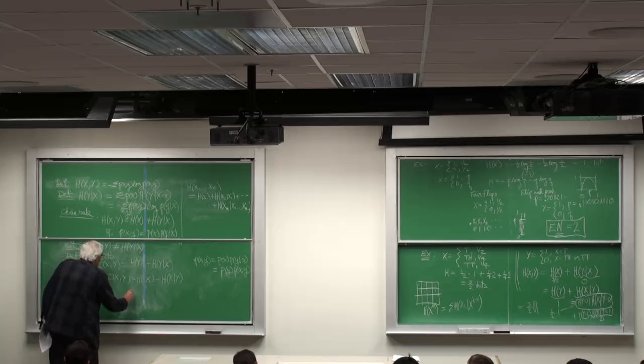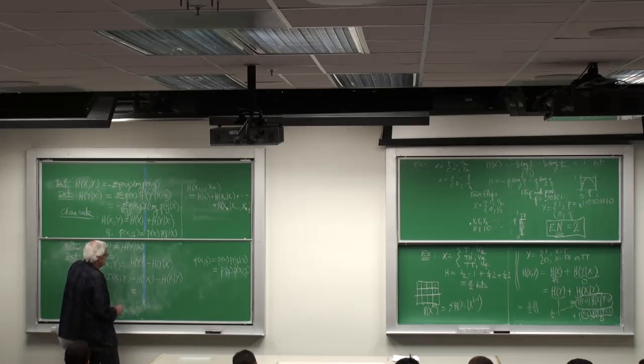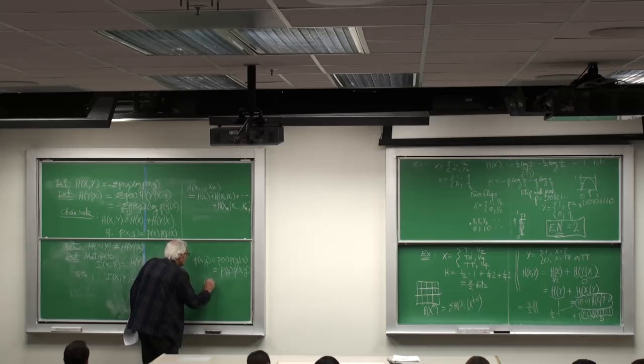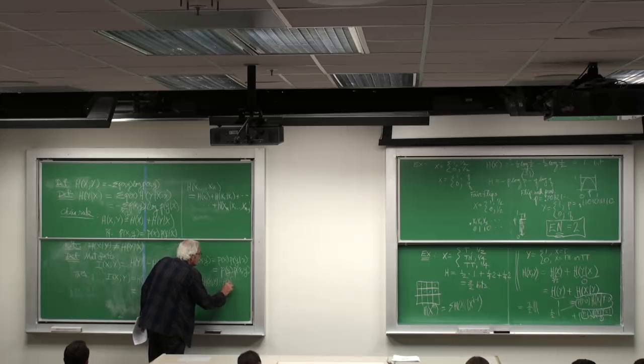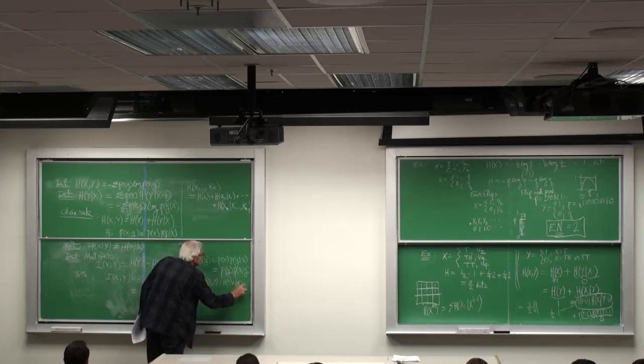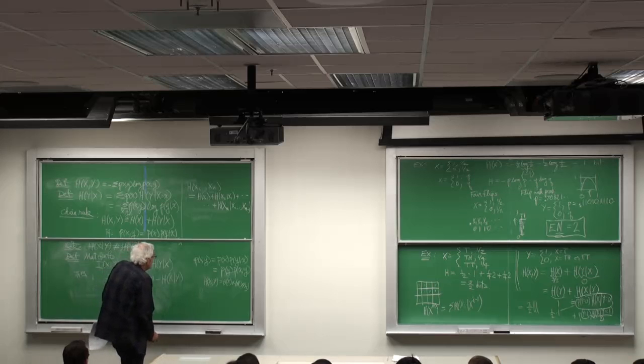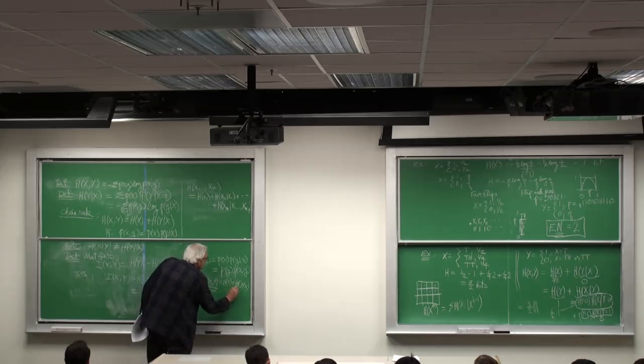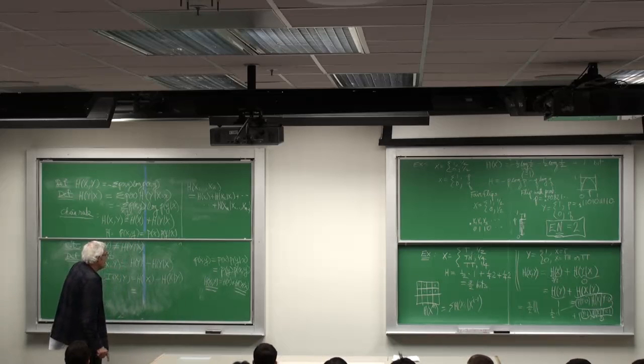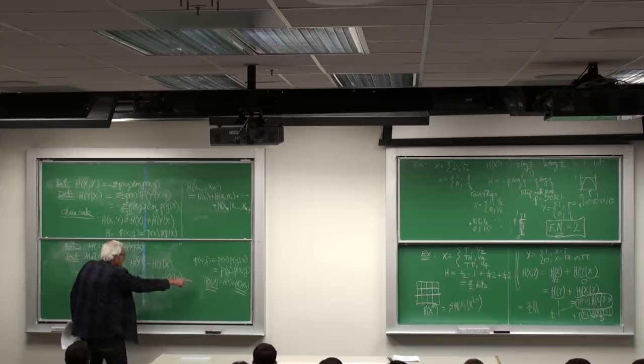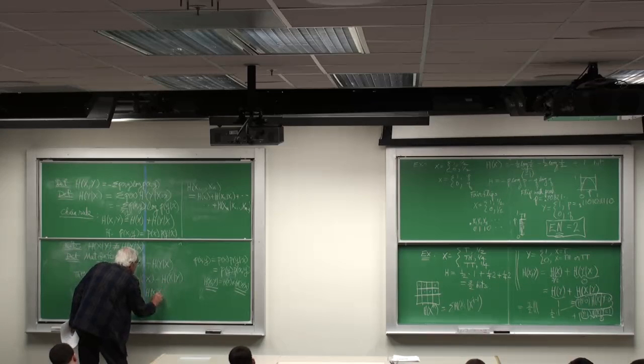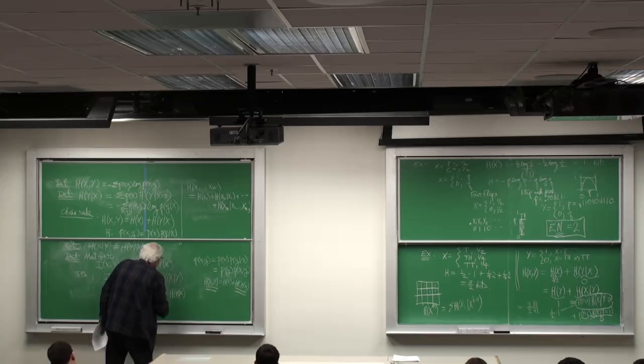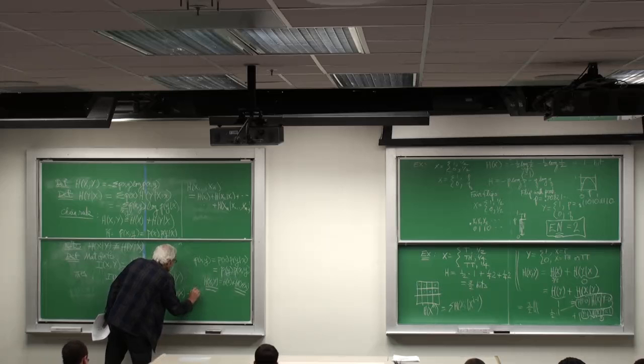And it can also be written as, well we had this fact, we had H of XY equals H of X plus H of Y given X. So therefore I can write H of X as this minus that. So let me do it. For H of X, I write H of XY minus H of Y given X. And then I copy this term, minus H of X given Y.